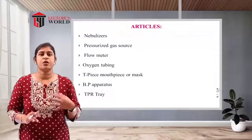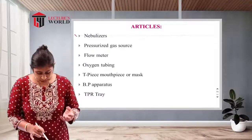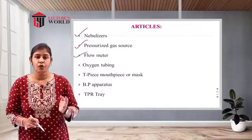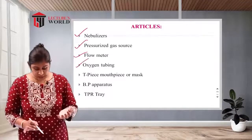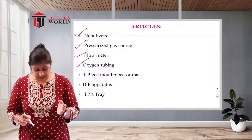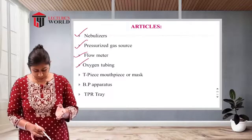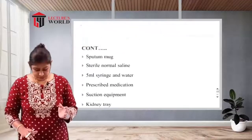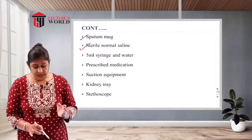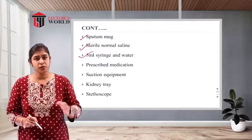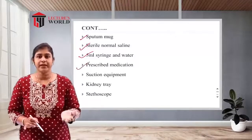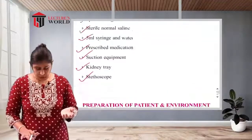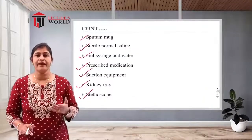Articles required for nebulization: nebulizer, pressurized gas source, flow meter, oxygen tubing, T-piece mouthpiece or mask, BP apparatus, sputum mug, sterile normal saline, 5 ml syringe with water, prescribed medication, suction equipment, kidney tray, and stethoscope.